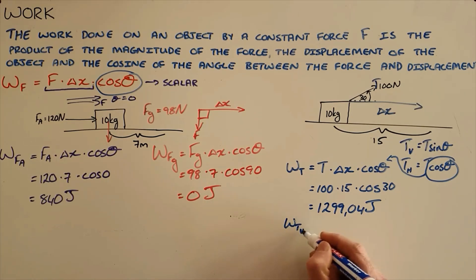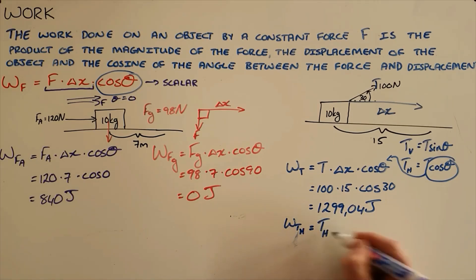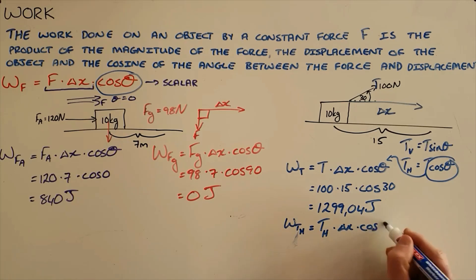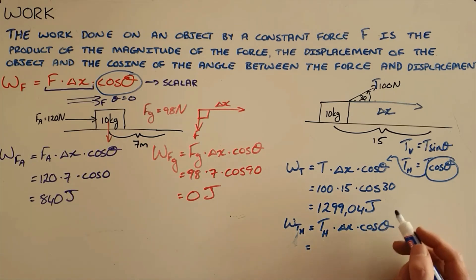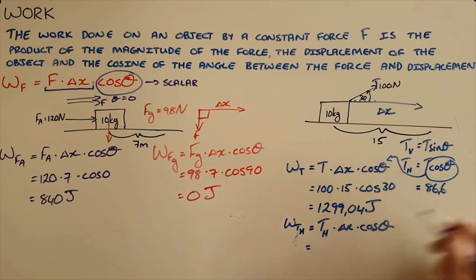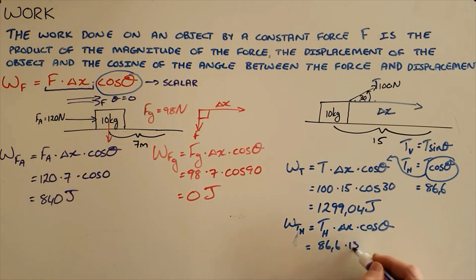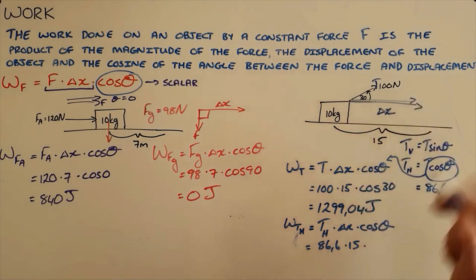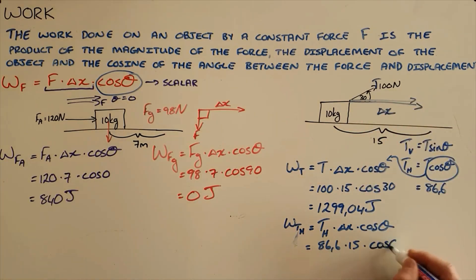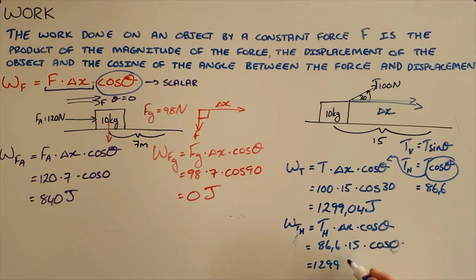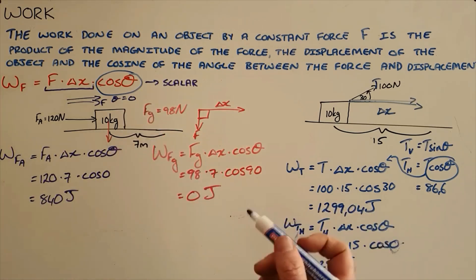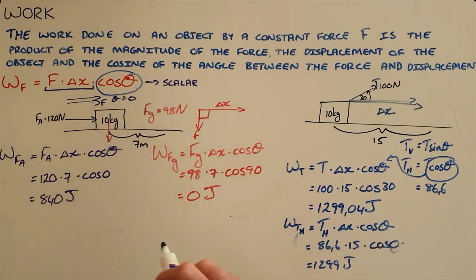We could also have calculated this separately using the horizontal component of the tension force, which is 86.6 newtons, times the displacement of 15 meters, with an angle of zero between them — giving the same result. This confirms that the work formula already includes the cosine so that it calculates only the component of the force acting in the direction of the displacement.